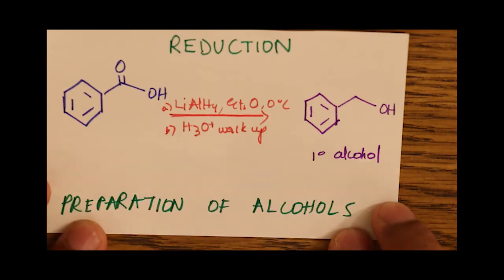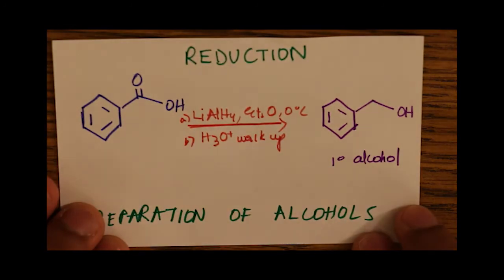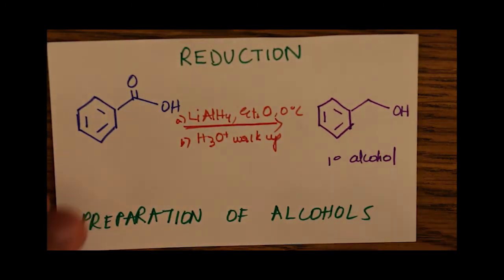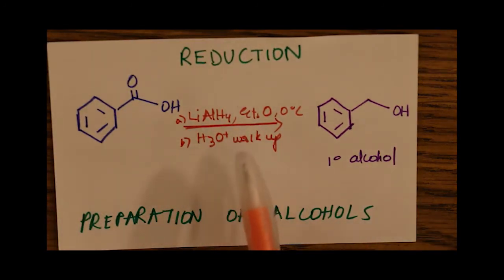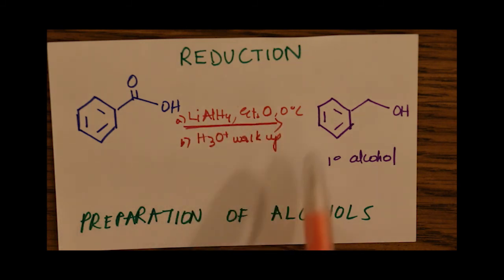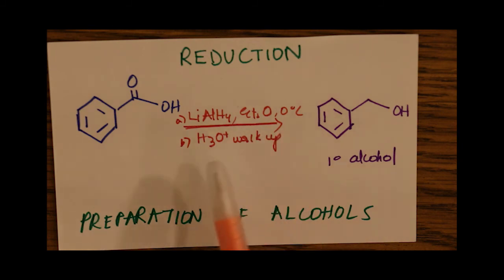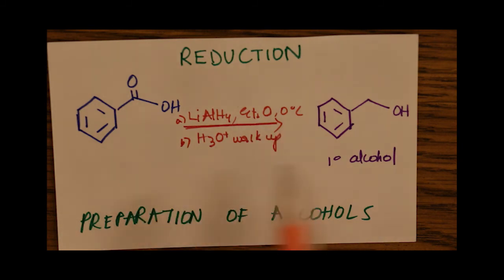Our next reduction reaction in the preparation of alcohols uses a carboxylic acid. Again, we need lithium aluminum hydride — the very strong reducing agent — and the same conditions of ethanol at zero degrees Celsius and an acid workup. This also gives us a primary alcohol, the same as an ester.